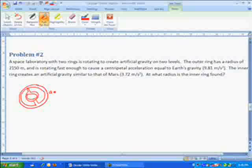On the inner ring, we want it to be 3.72 meters per second squared, units of acceleration. We know that the radius to the outer ring is 2150 meters. So we're going to start off the same way, a equals v squared over r. We'll use the acceleration of gravity, 9.81 equals v squared over 2150.